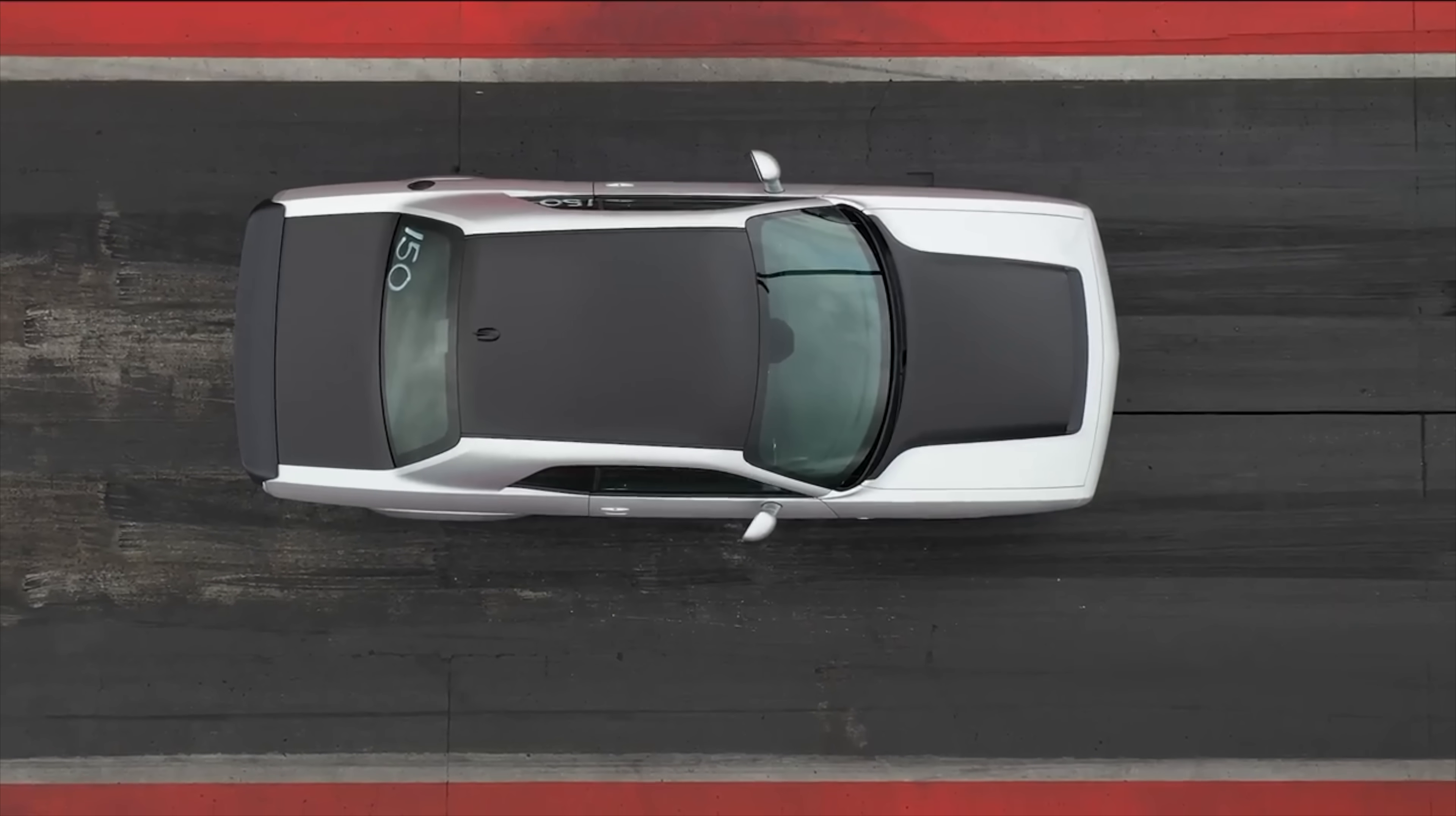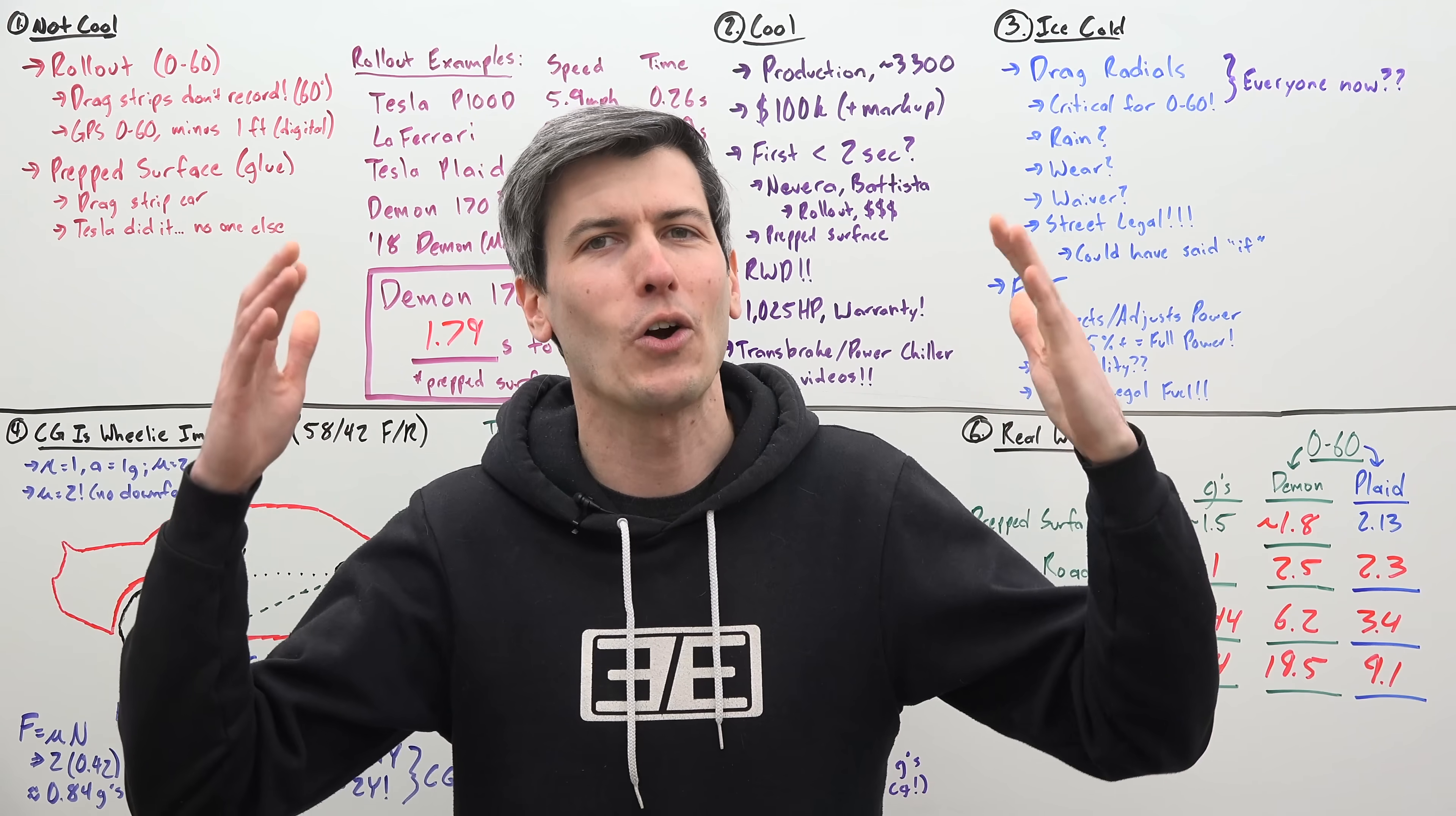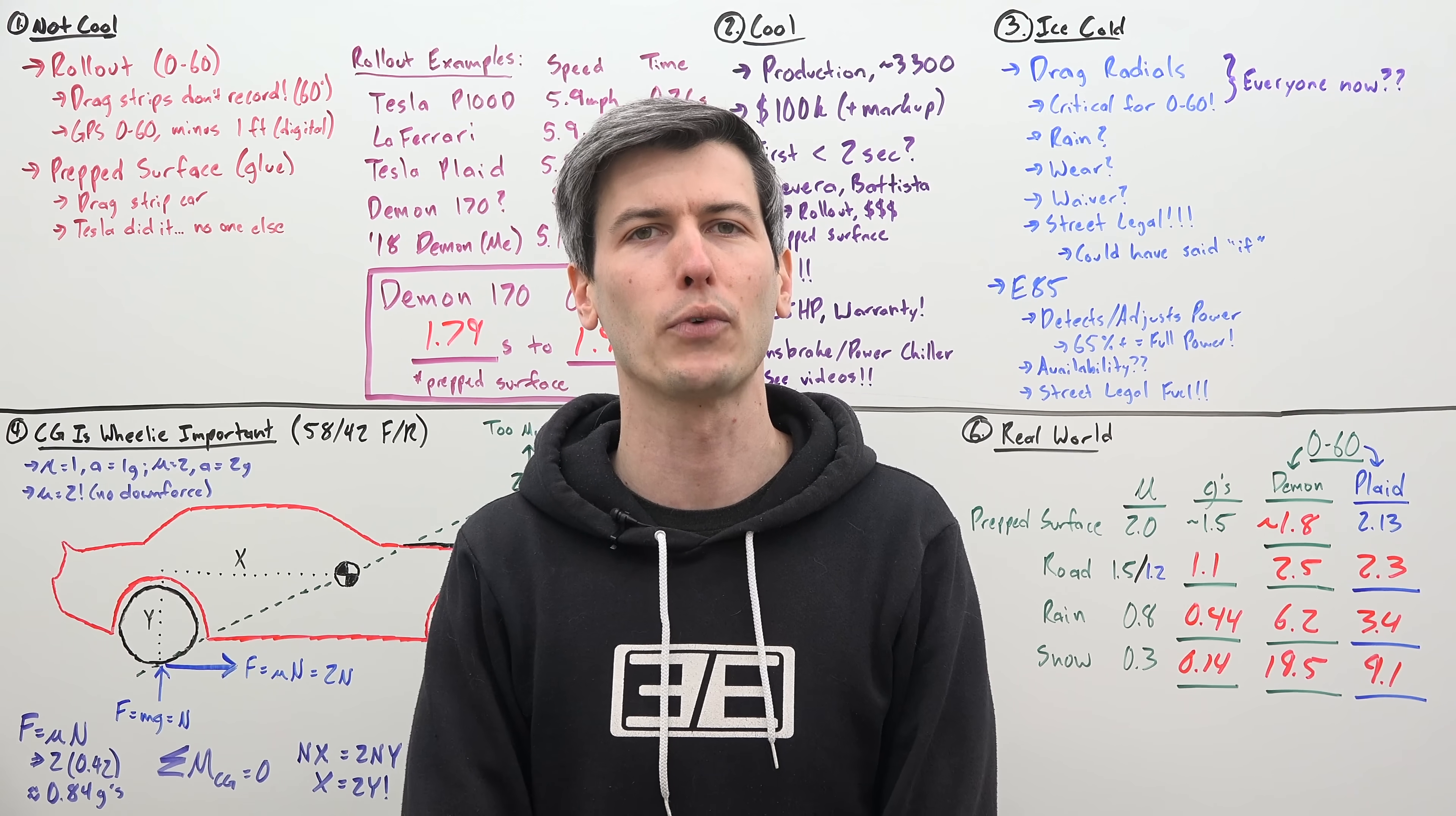Alright. So quick summary on a prepared surface, the zero to 60 is somewhere around 1.8 seconds, which is absolutely nuts. In the real world, I doubt we're going to see a zero to 60 better than 2.5 seconds. And then the other thing is, once again, this car is incredibly cool. You don't have to be misleading about it to explain how cool it is. So my advice to Dodge is simply let out the real numbers, release the real numbers, let a third party test this thing. It'd be awesome if you did. Thank you all so much for watching. And if you have any questions or comments, feel free to leave them below.